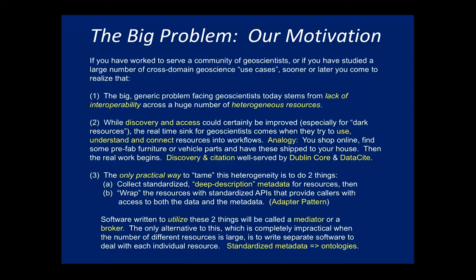Once a standardized interface and standardized deep description of the resource are in place, you can write software that can automatically connect these resources and adapt for their differences — it ends up being really cool. It qualifies as an intelligent system because it's doing something significantly difficult automatically. The software framework has access to things called mediators or brokers, and based on what it learns from components being connected, it automatically calls those to fix whatever the problem is — different grids, units to be converted, time steps to be interpolated.